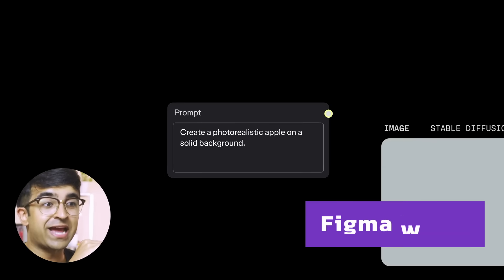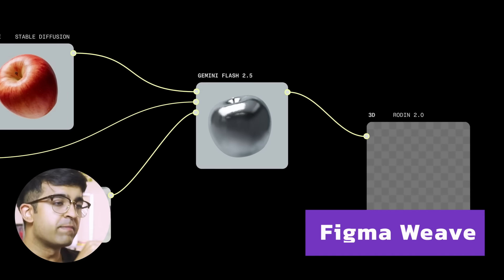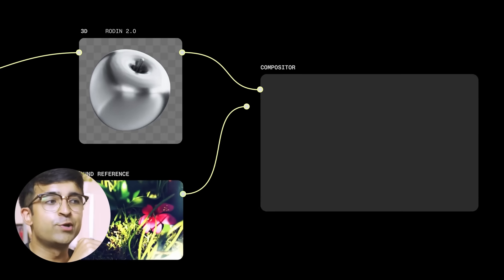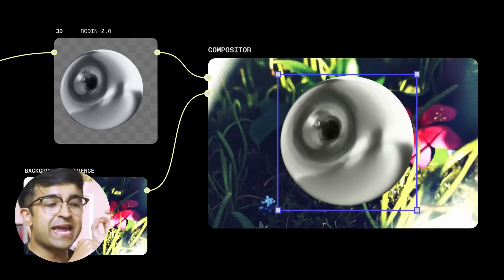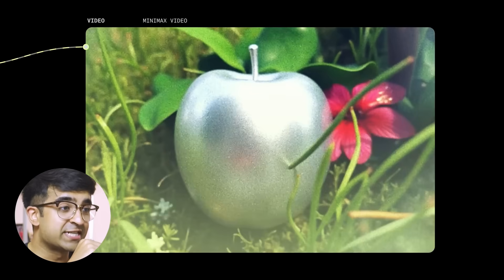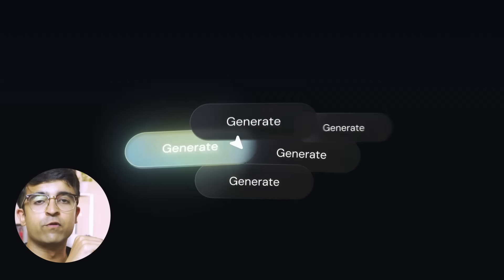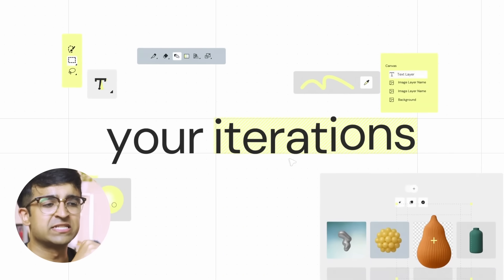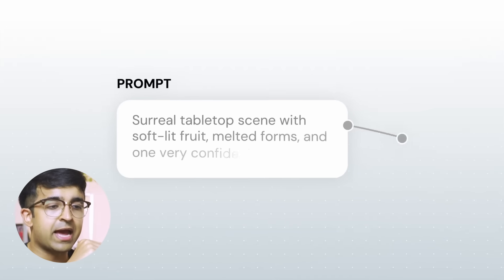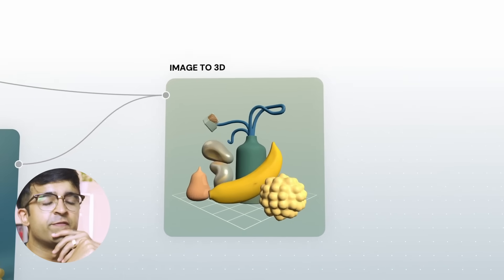The next big upcoming tool is Figma's Weave. Figma recently acquired a startup that was already doing node-based AI editing and photo generation. So node-based photo editing and generation is coming to Figma. We'll be able to connect nodes and build beautiful graphics and UIs with these advanced node-based integrations. They already had 20-plus people working on the team, and now they'll be working for Figma.